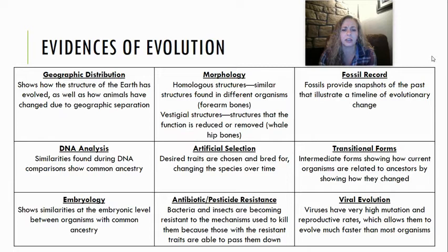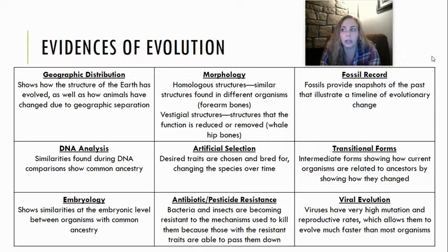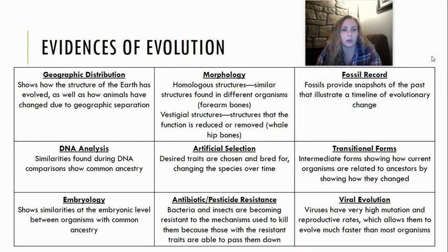Antibiotic and pesticide resistance: bacteria are becoming resistant to antibiotics because of the overuse of those antibiotics. What happens is we take the antibiotics and kill off all the ones they can kill, but due to mutation, some of those don't die. Guess who's alive then to reproduce? The bacteria that the antibiotics didn't kill. So now we have new generations of bacteria that the antibiotics can't kill. The same thing happens with pesticides and killing insects on our crops — we kill off the ones that can be killed, but due to genetic mutation, some survive and then have babies that are also resistant.